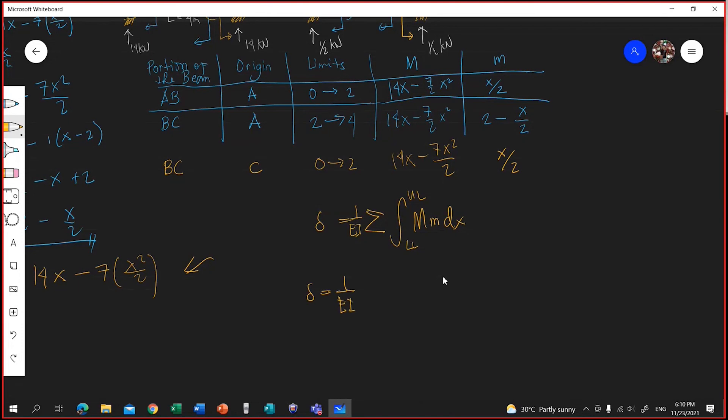For segment A-B, that is the integral of 14x minus 7x squared over 2 times x over 2 dx from what's the limit? 0 to 2. Plus, for the integral of B-C, that is, let's use this B-C. 14x minus 7x squared over 2 multiplied by 2 minus x over 2 dx from 2 to 4.